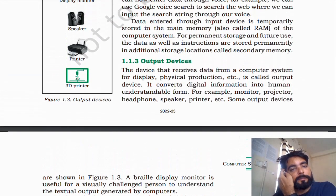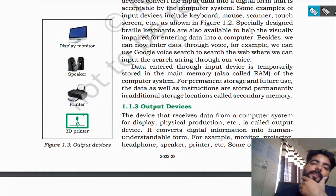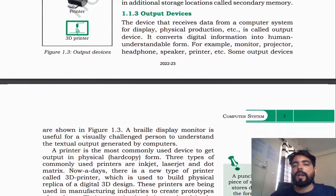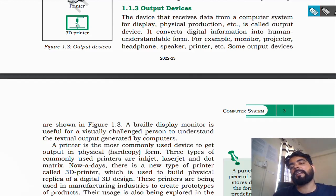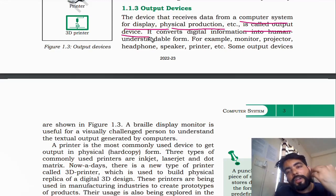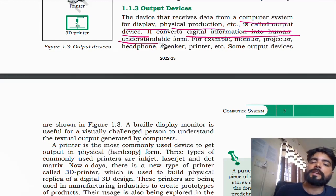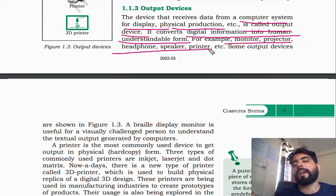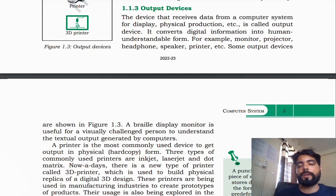Now let us study about output devices. The devices that receive data from a computer system for display, physical production, etc. are called output devices. They convert digital information into human-understandable form. Examples include monitor, projector, headphone, speaker, and printer, as shown in figure 1.3.